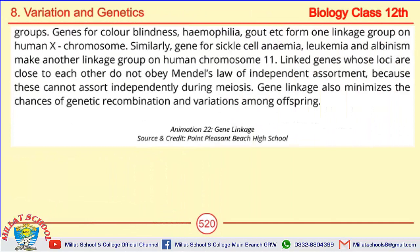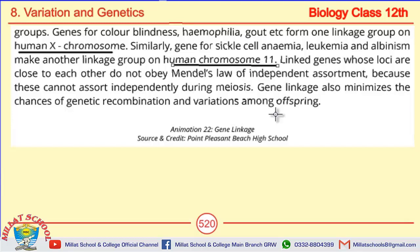For example, genes for color blindness, hemophilia, and EDC form a linkage group on the human X chromosome. Similarly, genes for sickle cell anemia, leukemia, and albinism form another linkage group on chromosome number 11. These are some important MCQ examples. May Allah bless you all — thank you very much, students.